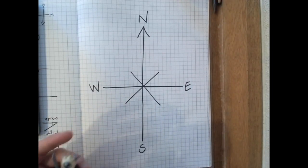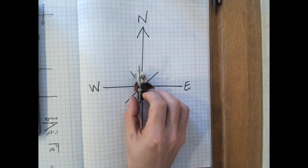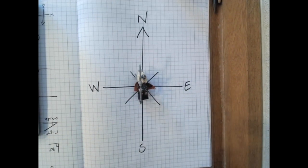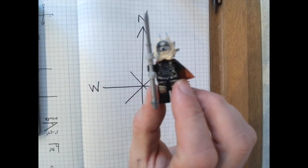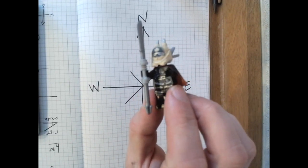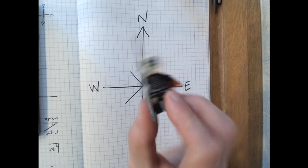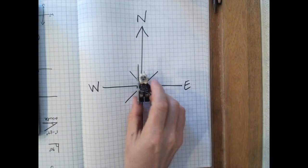We can then look at placing someone or something in the middle of a compass. Here, I've got a little Lego person. I think my son told me this person's name is Weasel. I think it's a woman, but I don't know. It doesn't really matter.